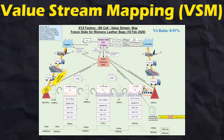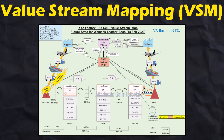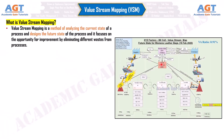Value Stream Mapping is a method of analyzing the current state of a process and designing the future state of the process. It focuses on the opportunity for improvement by eliminating different wastes from processes.